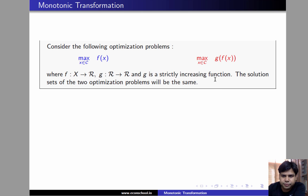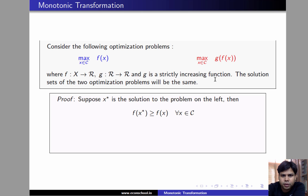Let us prove it. Suppose x* is a solution to the problem on the left. This implies that f(x*) ≥ f(x) for every x in C. Notice that g is a strictly increasing function. So, if f(x*) ≥ f(x) for some x in C, then it must be the case that g(f(x*)) ≥ g(f(x)) for that x in C.